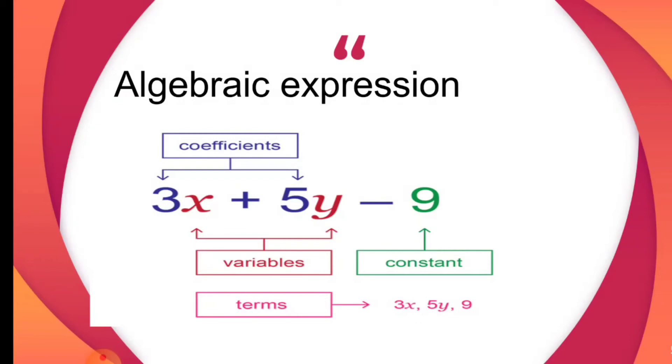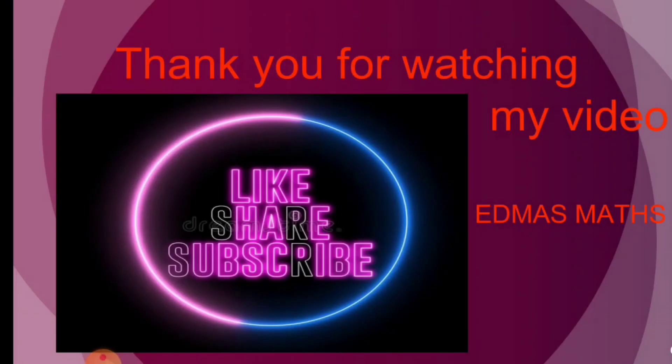In this expression we have totally three terms. The first term is 3x, the second term is 5y, and the third term is 9. These three terms are connected with the mathematical operations plus and minus. So this is the explanation of this algebraic expression.